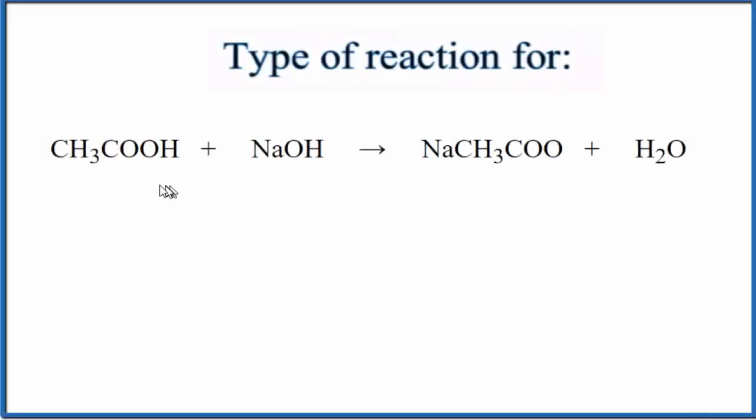In this video, we'll look at the type of reaction for CH3COOH plus NaOH. This is acetic acid, this is sodium hydroxide. Sometimes you'll see acetic acid written differently - it's the same thing. We write this COOH.